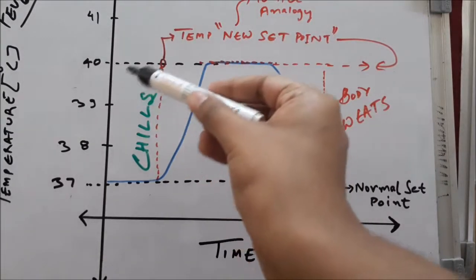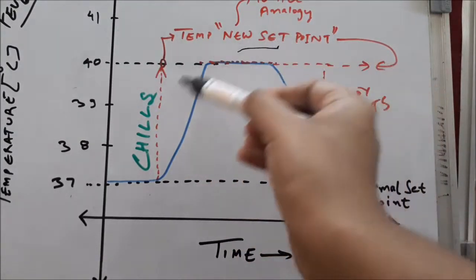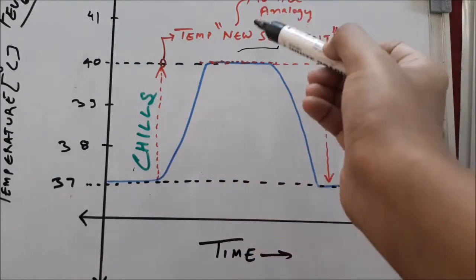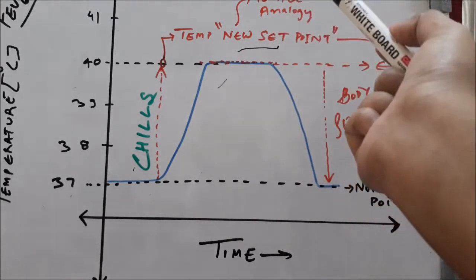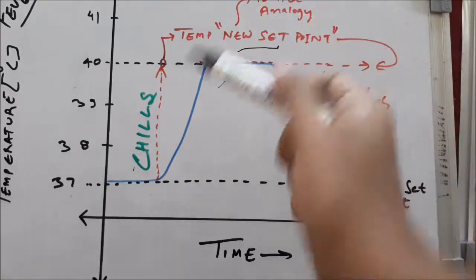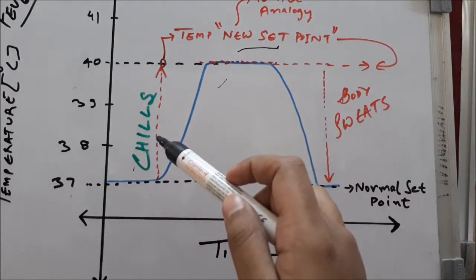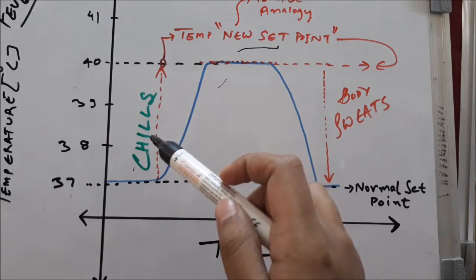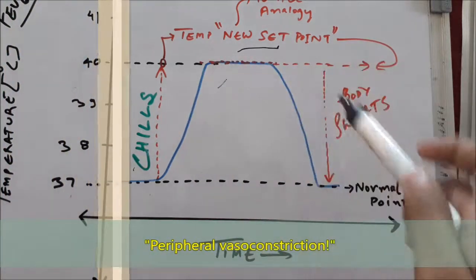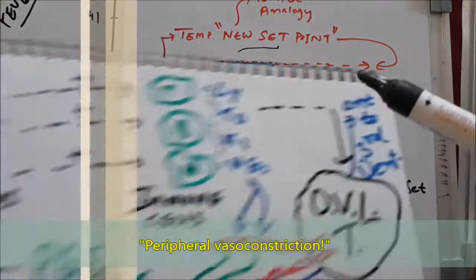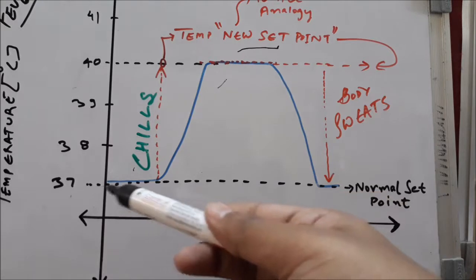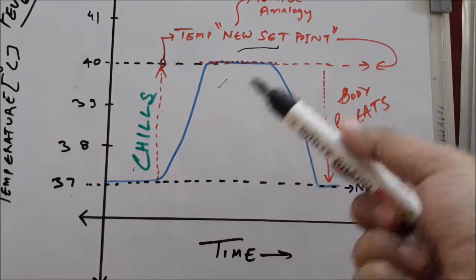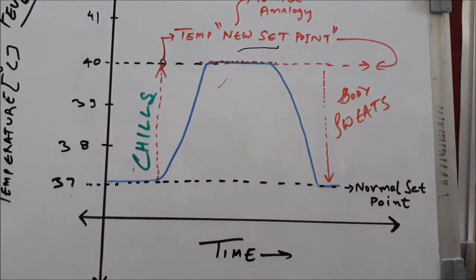With the hypothalamus set to a new set point, it acts through the autonomic nervous system — both sympathetic and parasympathetic — to tell the body to chill, meaning to vasoconstrict and shiver, as already discussed. Finally, when cytokine stimulation decreases, the new set point returns to the normal set point of 37 degrees Celsius. This gives a comprehensive overview of fever pathophysiology.